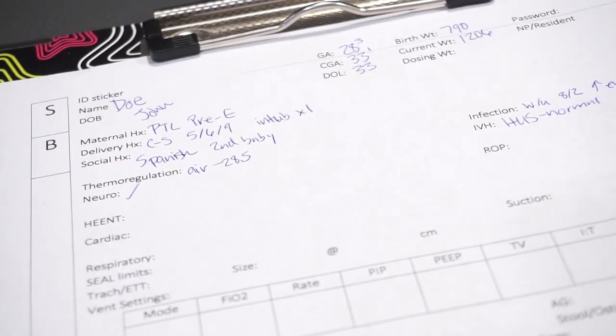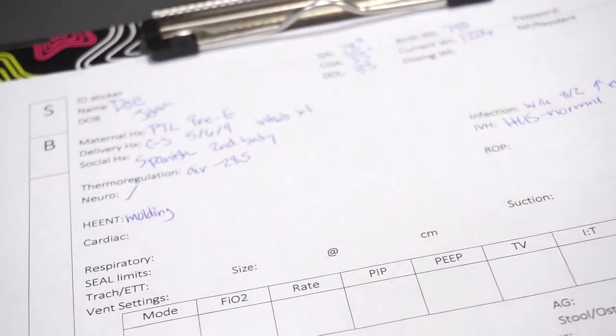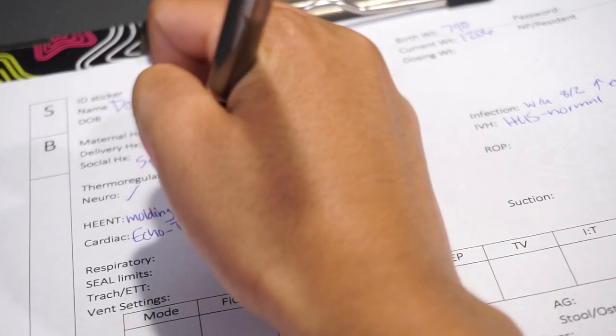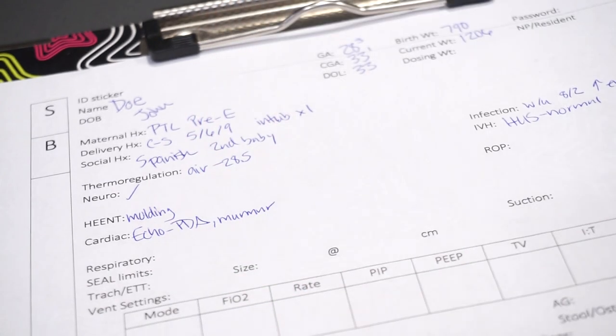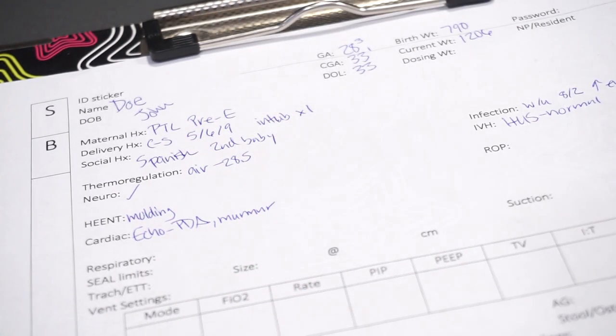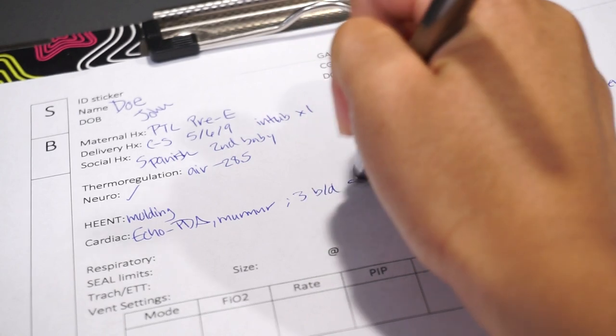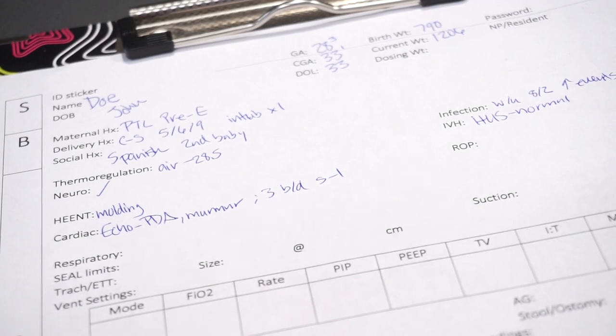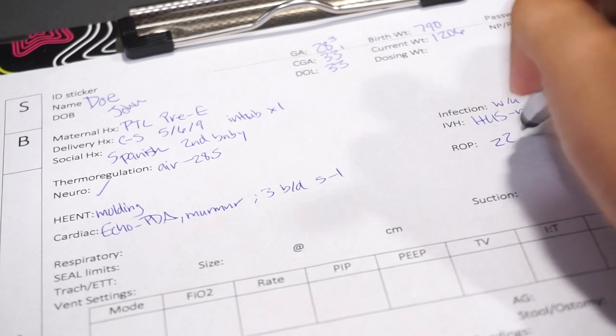As far as HEENT, he does have some molding. Cardiac, his last echo showed that he has a PDA. And he does have a murmur. So for my shift, he did have about 3 Brady D-sats. And they were self-limiting. ROP, his last exam was last week, so he's due to have another one next week. He is zone 2, stage 0.